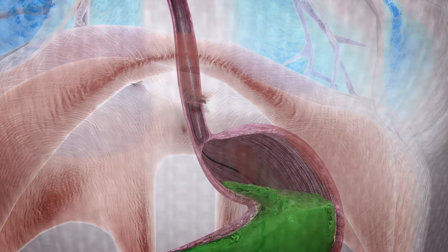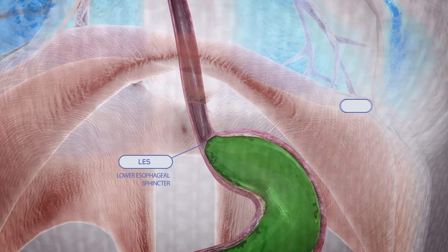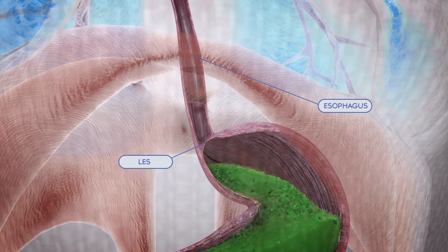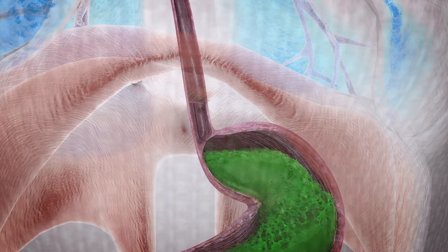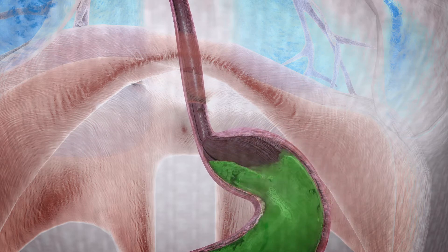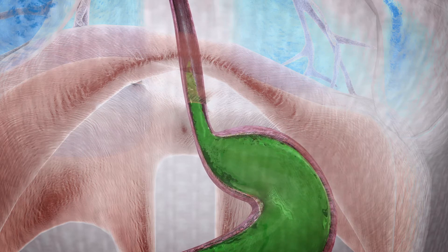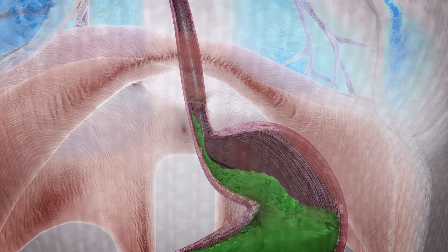At either end of your esophagus is a ring of muscle called a sphincter. Normally, your lower esophageal sphincter, or LES, keeps the contents of your stomach where they belong, in your stomach. When the LES isn't working properly, reflux splashes up into the esophagus.